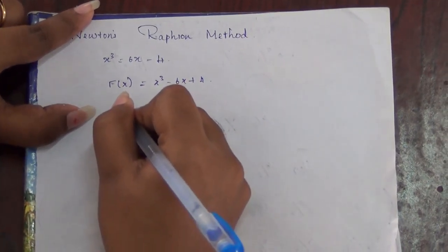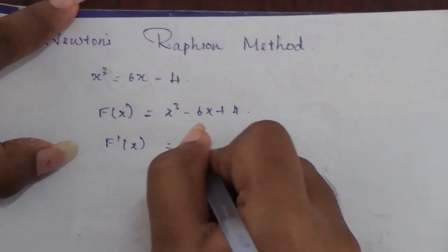Now we have to differentiate it with respect to x. So we get f'(x) = 3x² - 6.